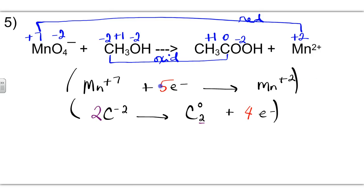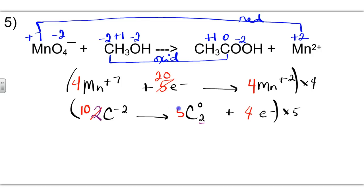To balance the electrons — five and four — we multiply them by each other: the manganese half-reaction by four and the carbon half-reaction by five. Distributing: four times Mn⁺⁷ gives a coefficient of four, four times five equals twenty electrons; five times C₂ gives a coefficient of ten carbons with a five out front, and five times four equals twenty electrons. Now both half-reactions have twenty electrons. We place the new coefficients back: four in front of KMnO₄, ten in front of C₂H₅OH, five in front of CH₃COOH, and four in front of MnSO₄.